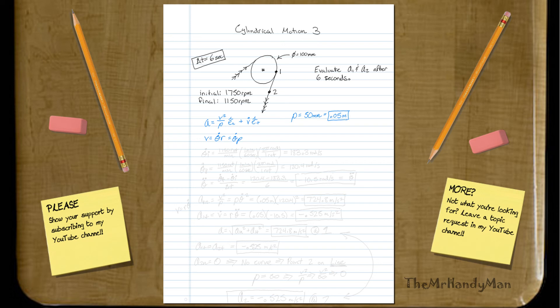So we don't know what theta dot is, but we can convert it from the two initials and finals. So why don't we just do that? Why don't we find out what our initial and final theta dots are? So I'm going to say theta dot i, initial, would be 1750 rotations per minute. And then one minute equals 60 seconds, and two pi radians will equal one rotation. And from that, we'll get 183.3 radians a second.